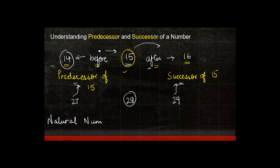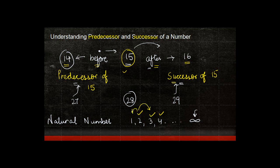When we take the natural numbers — which go from one, two, three, four and so on until infinity — every natural number, whether it is two, three, or four, will have a successor, which is the number just after it, and a predecessor, which is the number before it, except for one.